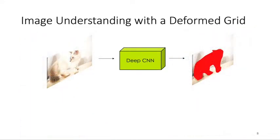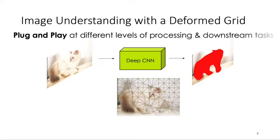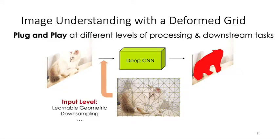Our deformable grid is a plug-and-play module that can be applied at multiple levels of image understanding. And we showcase three examples in our work. It can be applied to the input level by doing downsampling inside the grid, or the output level by raising object boundaries with the deformed grid.